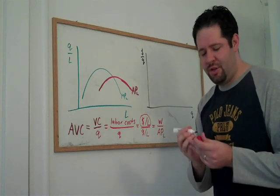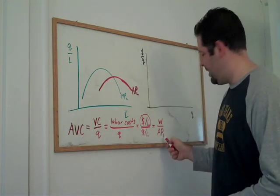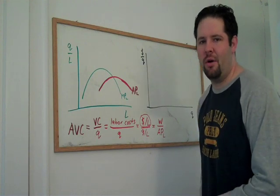Now we have a relationship between average variable cost and average product. All we need to know is the wage.